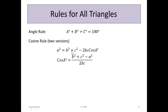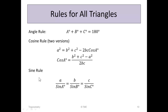The rearranged cosine rule is useful when all values on the right-hand side are known — for example, if you know all three side lengths A, B, and C, you can calculate one of the angles. Another rule used is the sine rule, which states that A over sine A equals B over sine B equals C over sine C. In other words, the ratio of each side to the sine of the angle opposite it is the same for all three sides.